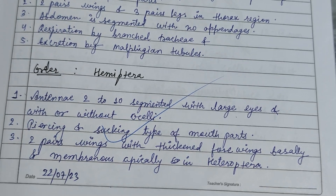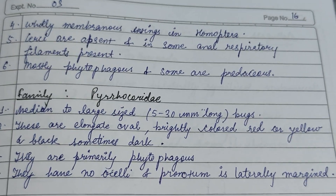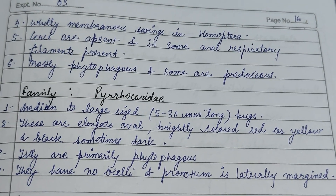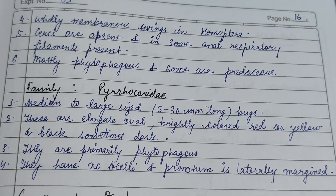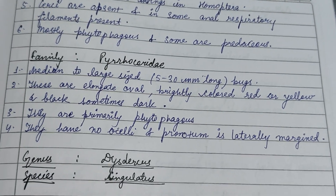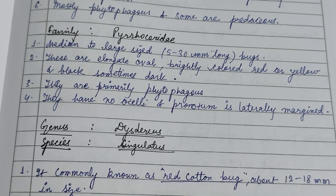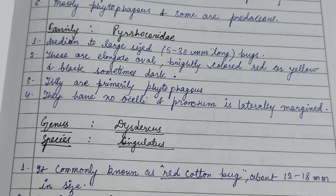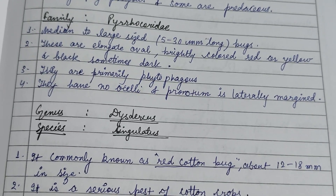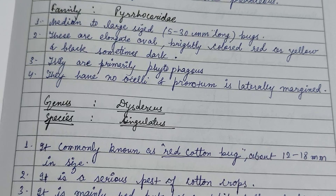They have piercing and sucking type mouthparts. They feed mostly on plant material, so they are phytophagous, and some are predaceous. The family Pyrrhocoridae has characteristic features: they are elongated, oval, and brightly colored — red, yellow, or black, sometimes dark colored — and are primarily phytophagous.